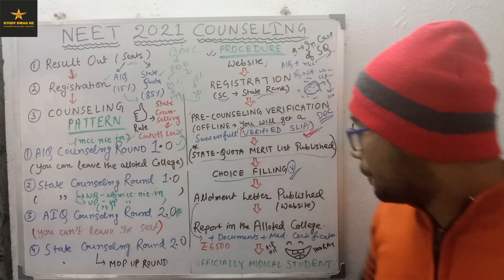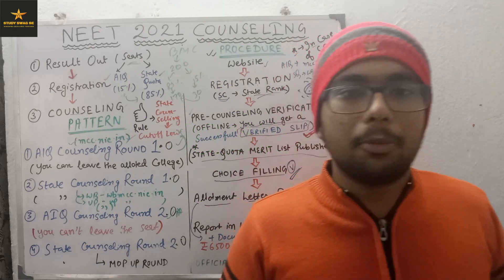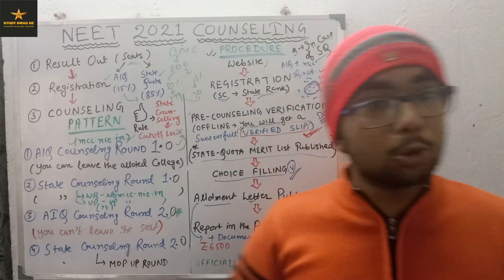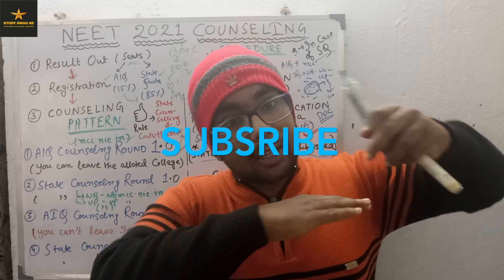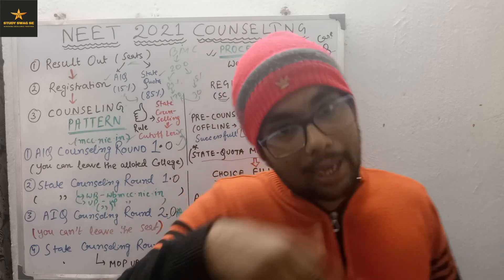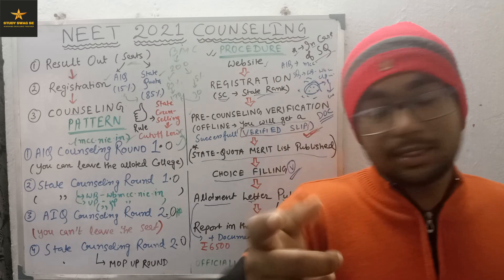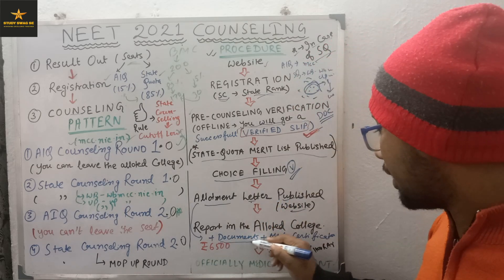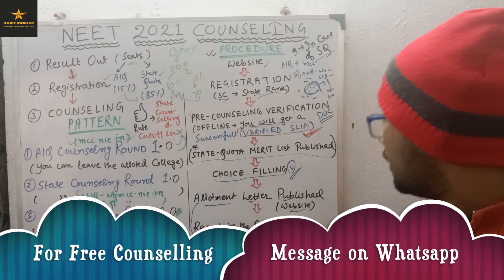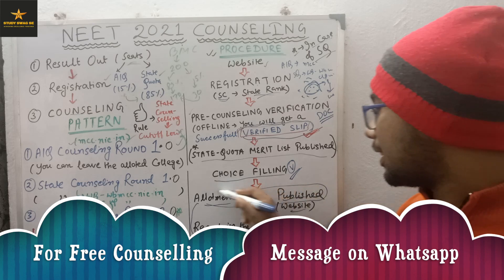After choice filling, your allotment letter will be published on the website — in our case wbmcc.in. An allotment letter will be generated; for example, if I got Burdwan Medical College in Round 1, it will say 'You are allotted Burdwan Medical College.' That is why it is called an allotment letter. Take the allotment letter and report to the college. You will also need to take all your documents, your medical certificate, and your verified slip.